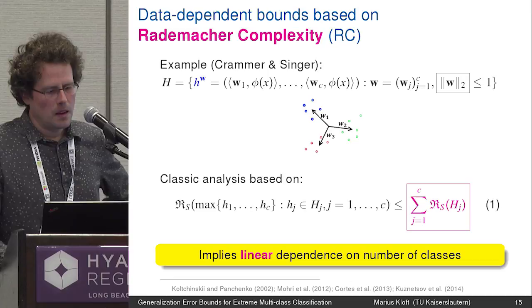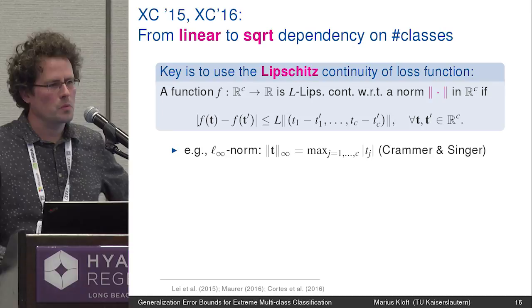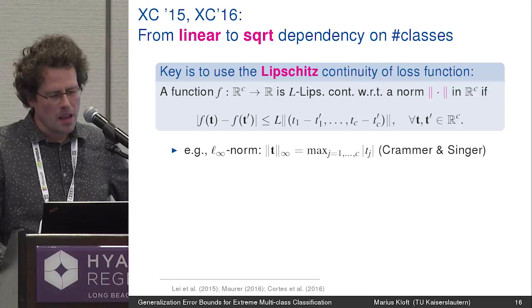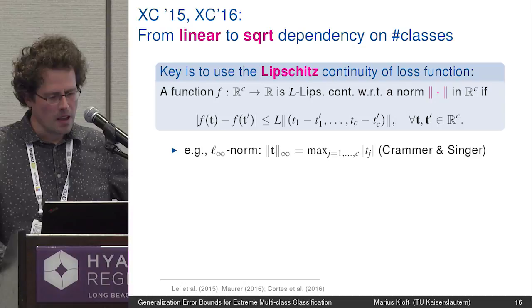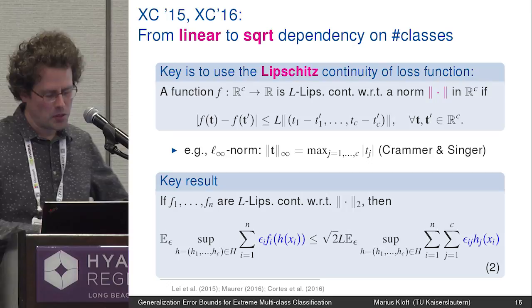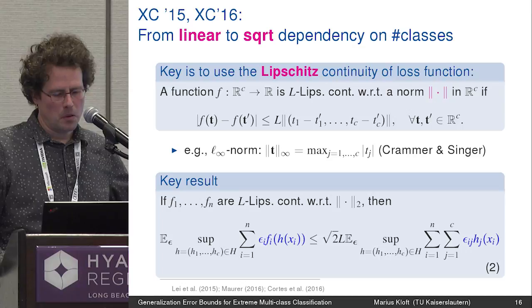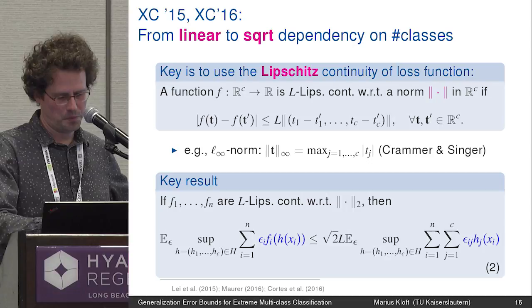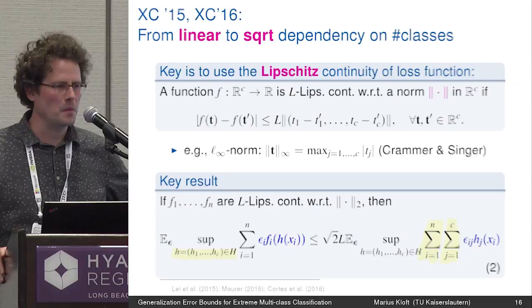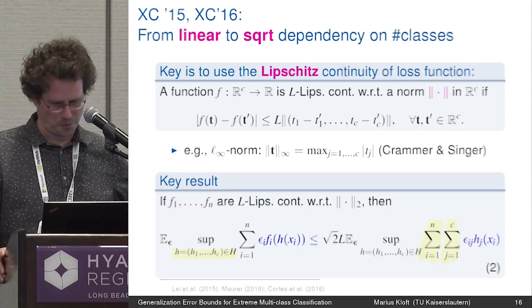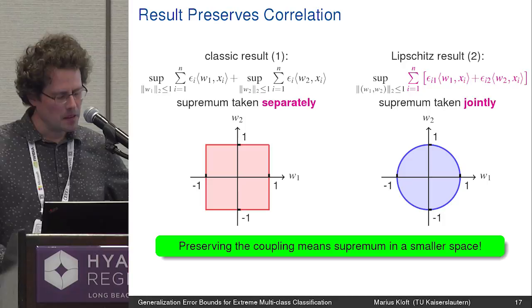Okay. So, generally we have two classes of generalization bounds, data independent and data dependent ones. In this talk I'm gonna focus on data dependent bounds. Many of these data dependent bounds are based on the Rademacher complexity. The interpretation of the Rademacher complexity is that it measures the size of my class of functions in the sense how well can they correlate with noise. Like the larger the class, the more it can match any random noise.